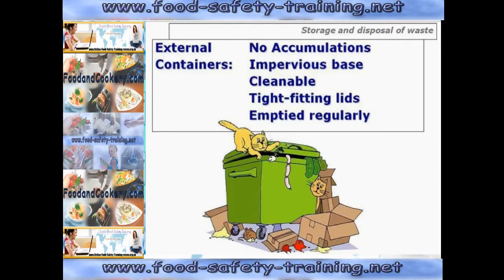With external bins, there should not be any accumulations outside the main bin — no black bags tied up and left outside the bin, which could attract pests such as birds and rodents clawing at the bags. The bins should be held on an impervious base such as concrete or tarmac, because pests do not like open flat spaces — they like somewhere to hide like soil, grass or vegetation. External bins should also be cleanable, disinfectable to kill spoilage bacteria, should have tight fitting lids, and should be emptied regularly by a local council or contractor.